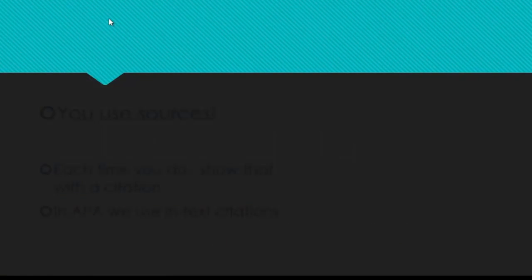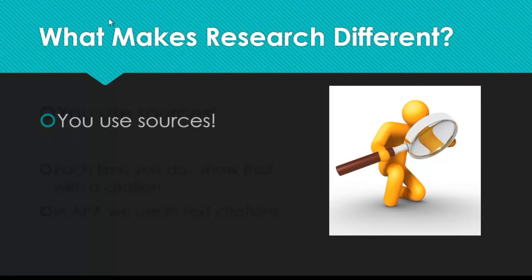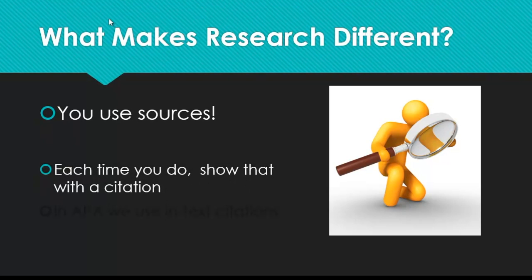The main thing that separates research assignments from others is that you should be using sources throughout the body of your work to back up your statements. Each time you do this, you need to indicate that you're using someone else's work to avoid plagiarism. In APA style, this is done through the use of the in-text citation.